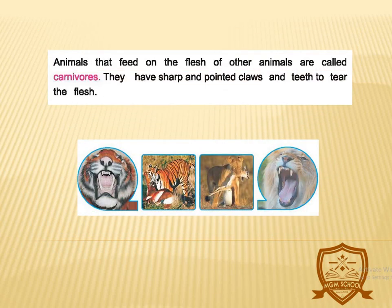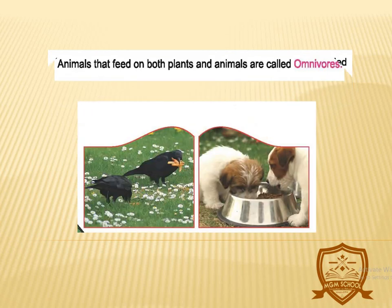Animals that feed on the flesh of other animals are called carnivorous. They have sharp and pointed claws and teeth to tear the flesh. Example: lion and tiger.